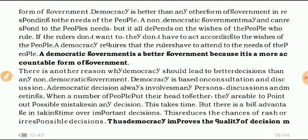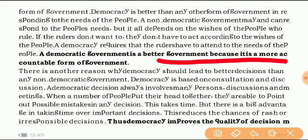A democratic government is a better government because it is a more accountable form of government. By studying the case study of China you can conclude that democracy is the more accountable form of government — because it listens to the wishes of the people. Democracy is a government that listens to the aspirations of the people and makes a good society. So this is the first merit of democracy.